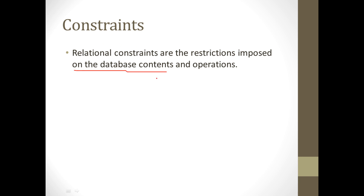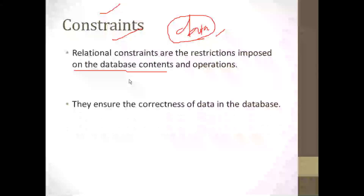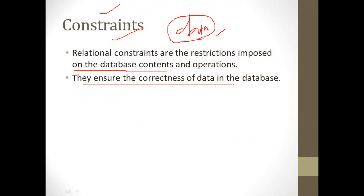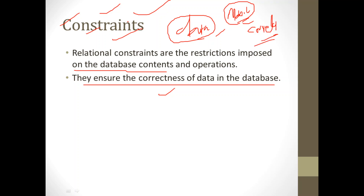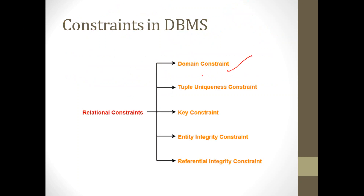Constraints, or relational constraints, are the restrictions imposed on the data. We put restrictions on the data to ensure the correctness of data stored in the database. For example, a mobile number must be 10 digits — that is a constraint. So we use constraints in DBMS to ensure data correctness.